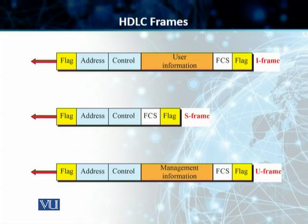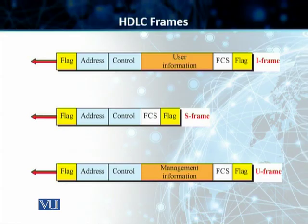In the case of S-Frames, they are used only to transport control information — no user information. As you can see, there is no field for user information. There is only a forward correction or FCS checksum, and we have two flags, an address, and a control field.